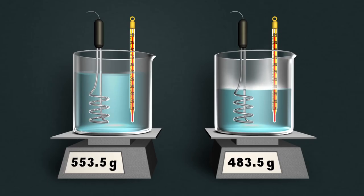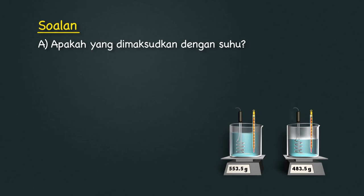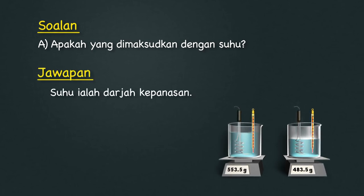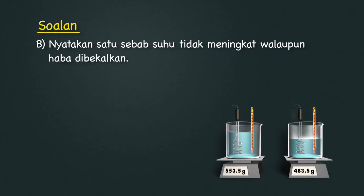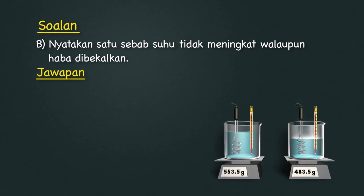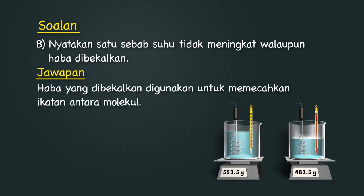Kita lihat pula contoh soalan bagi kertas dua. Rajah menunjukkan keadaan awal dan keadaan selepas 3 minit air dididihkan oleh suatu pemanas elektrik berkuasa 1,500 Watt. Bahagian A: Apakah yang dimaksudkan dengan suhu? Jawapan: Suhu ialah darjah kepanasan.